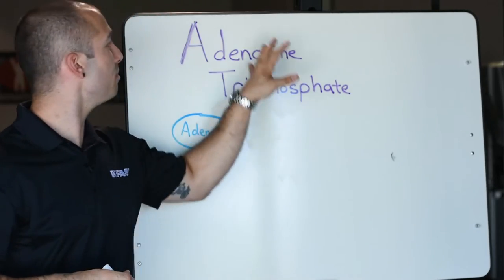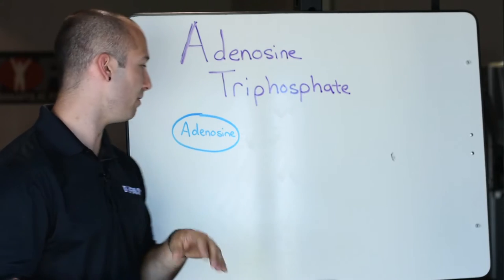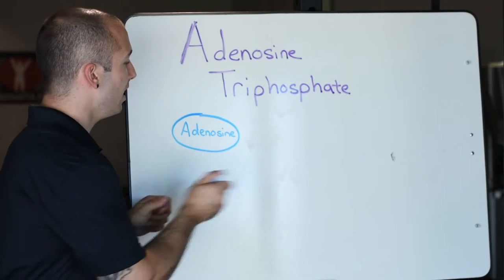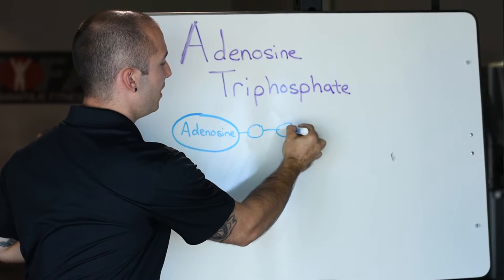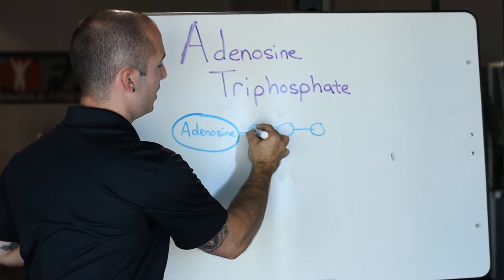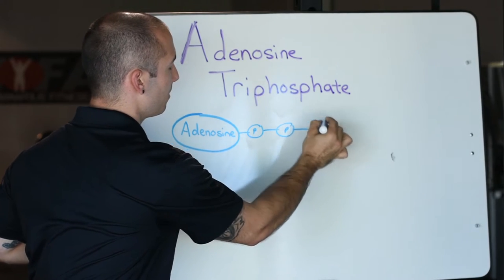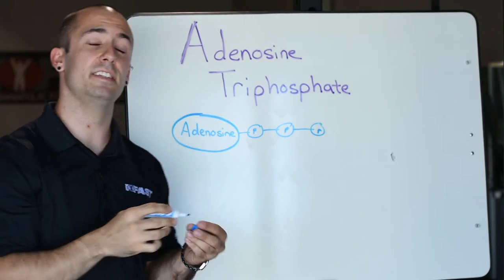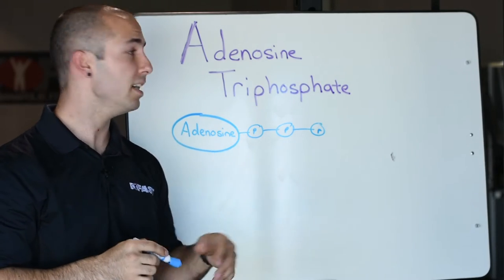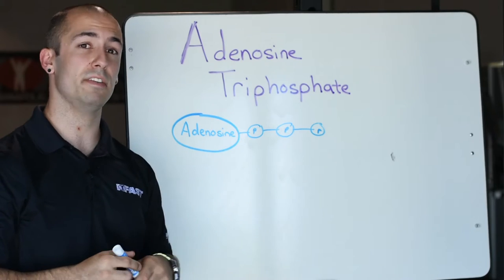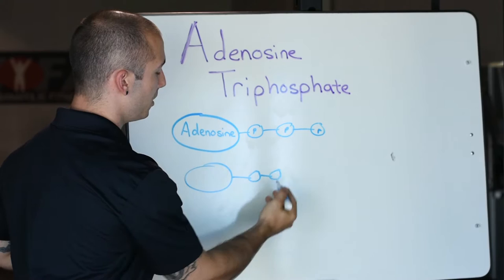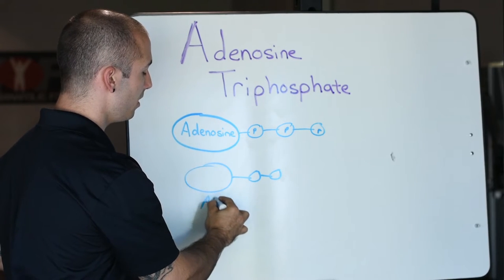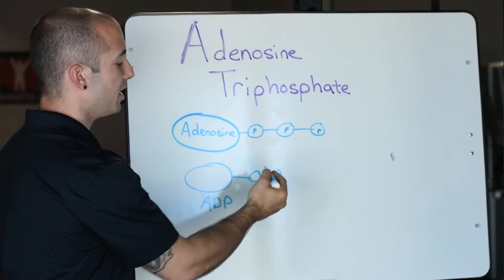We're going to make this really simple to start. All this adenosine triphosphate is, is I have one adenosine molecule and attached to it, triphosphate, I have three phosphate molecules. And if we have an adenosine triphosphate or an ATP, if we break off one of these phosphates here, so now we only have two phosphates, we have a molecule called ADP, or adenosine diphosphate.